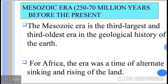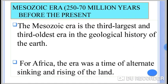The third one is the Mesozoic era. The Mesozoic era covers from 250 to 70 million years before the present. It is the third oldest era, next to the Precambrian and Paleozoic eras. In African geological history during the Mesozoic era, the era was a time of alternative sinking and rising — uplifting and sinking of land took place during this period.